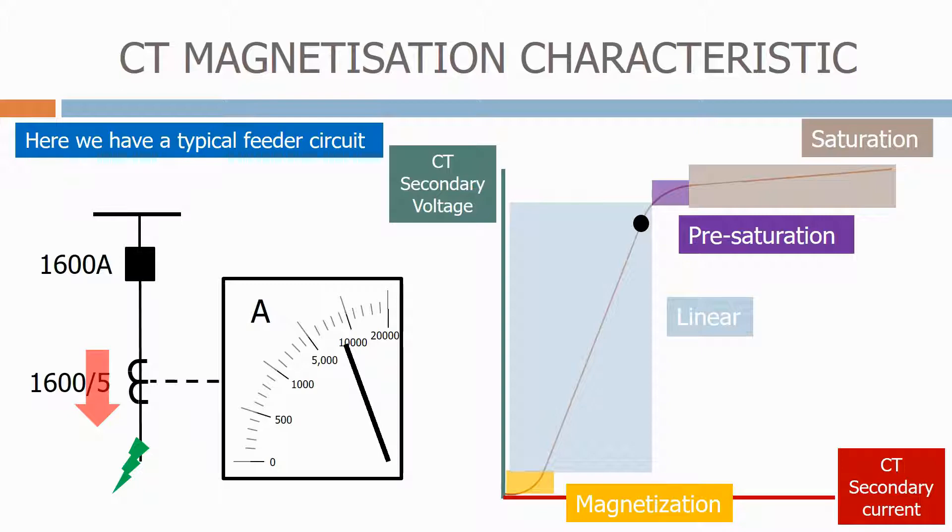Let's now apply a full unrestricted fault to the feeder. The primary current now goes beyond the capacity of the CT, and the characteristic goes into the saturation zone.